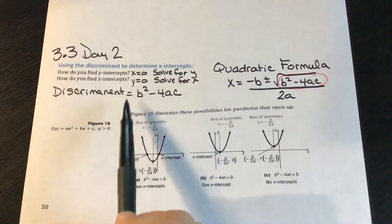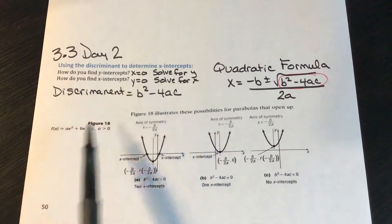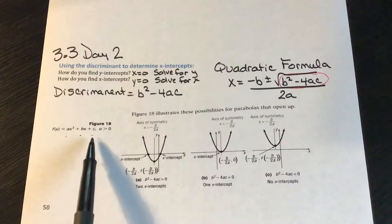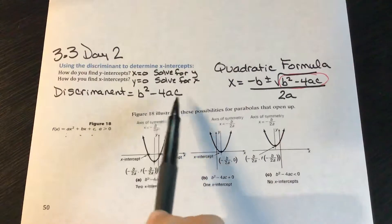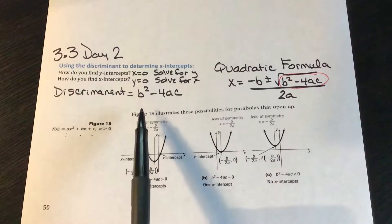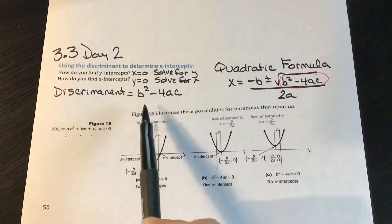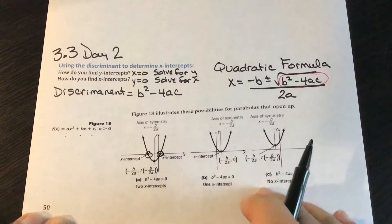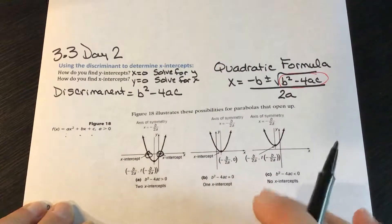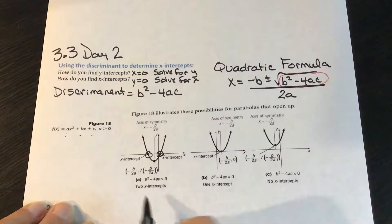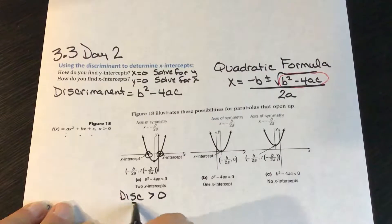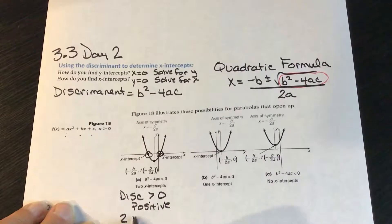The values come from the coefficients: a from x squared, b from bx, and c is our constant value. If I plug them into the discriminant and get a positive number, no matter what the number is, I'm going to have two x-intercepts. So the parabola will intersect the x-axis twice — if the discriminant is greater than 0, I have two x-intercepts.